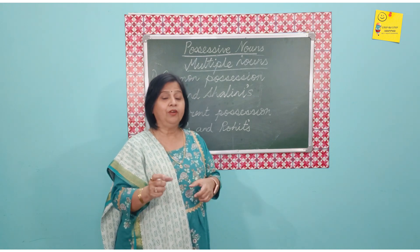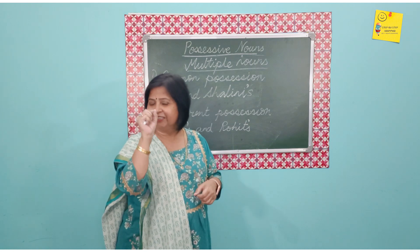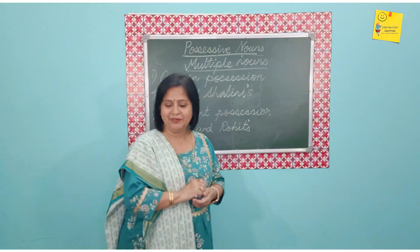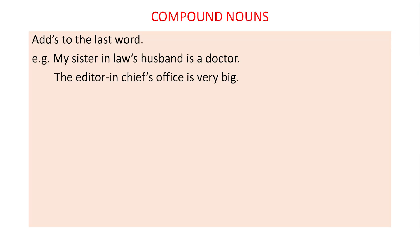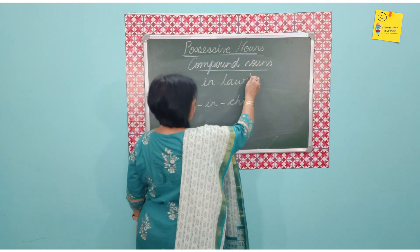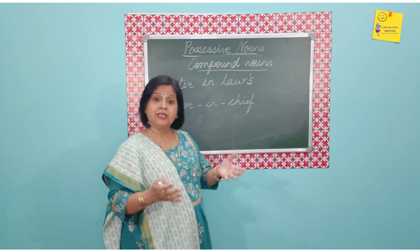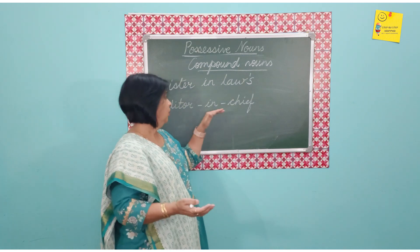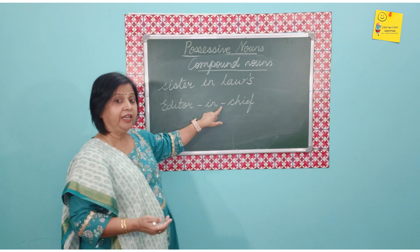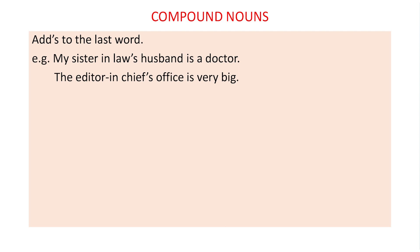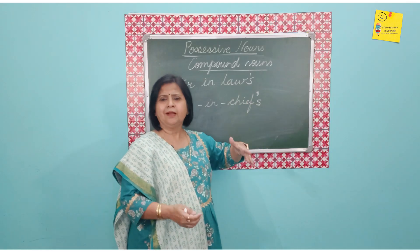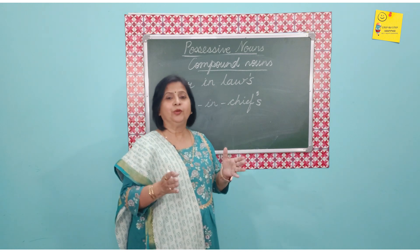Now let us look at the possessive form for compound words or hyphenated words. Compound nouns are formed of two or more words — for example, sister-in-law is formed of three words. For the possessive, we add apostrophe S to the last word: my sister-in-law's husband is a doctor, or my mother-in-law's necklace is made of diamonds. Similarly, the editor-in-chief's office is very big — the apostrophe S goes after chief.